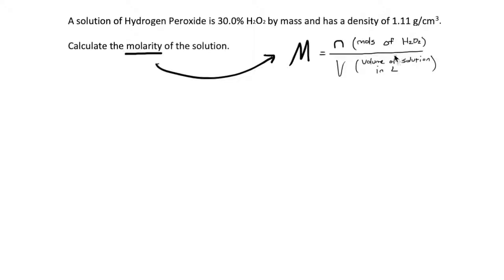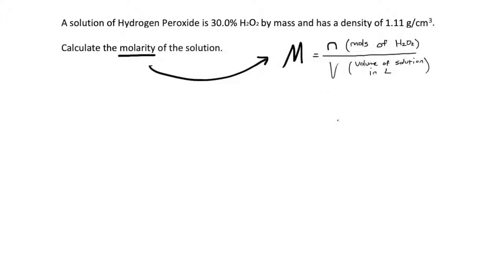Moles of H2O2, volume of solution in liter, clearly is the two unknowns that we're interested in finding here. We simply divide them and we have the molarity. It would be pretty simple, I think, to find the moles of H2O2 first.